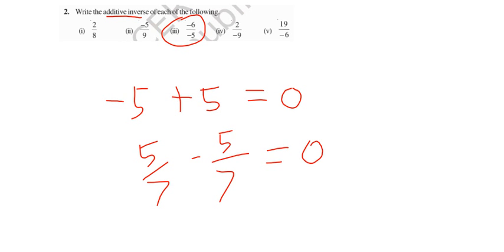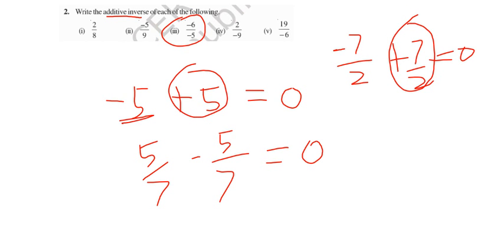If you have a rational number like -7/2, and you change the sign to 7/2, if you add them together it becomes 0. This is called the additive inverse. Whatever number is the opposite that makes the sum equal to 0 is the additive inverse of that number.